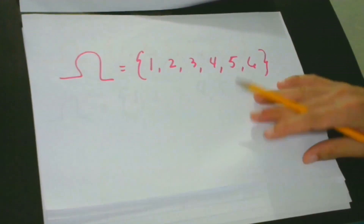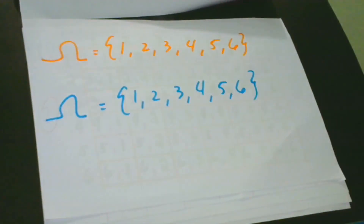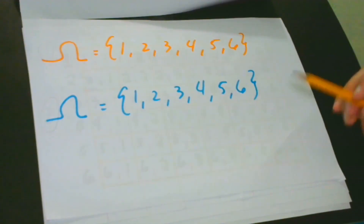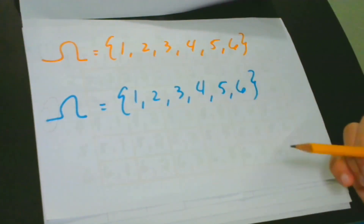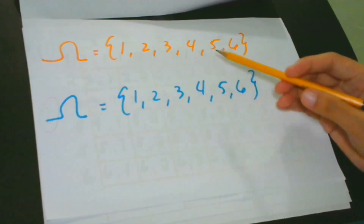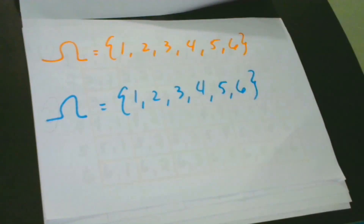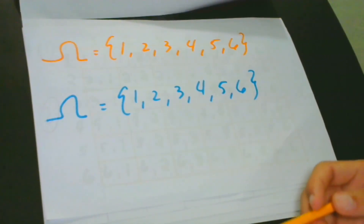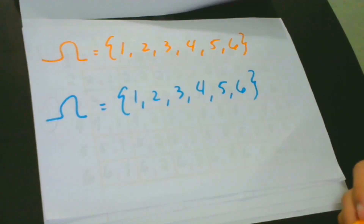Now let's consider two dice. What do you think is the total number of outcomes if we throw both dice together? Maybe you would say 12, since each die has six possible outcomes. But the answer is actually 36, not 12.